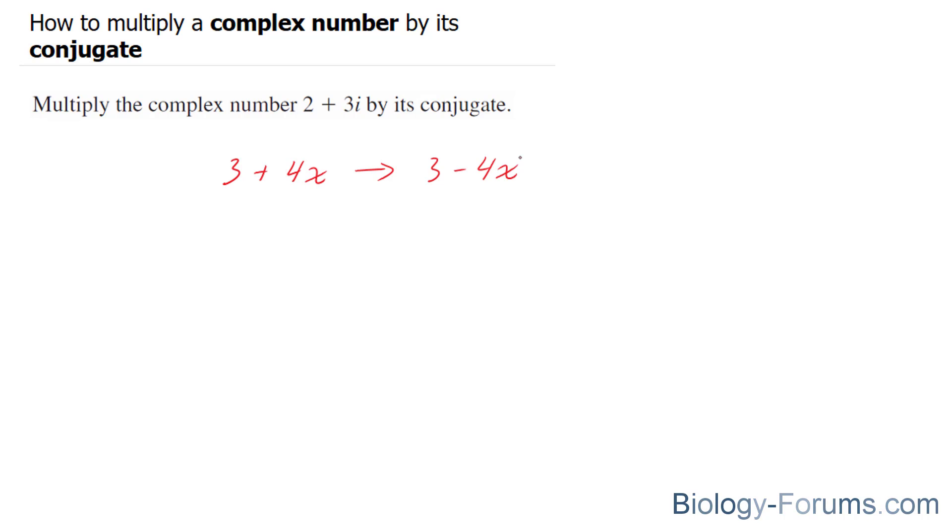In this question, what they want us to do is multiply this term by its conjugate. So let's do that: 2 plus 3i, which is a complex number, multiplied by 2 minus 3i.